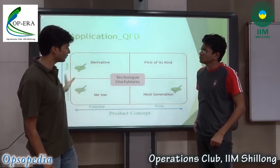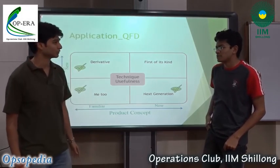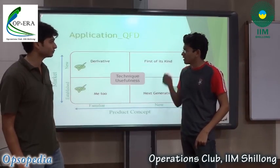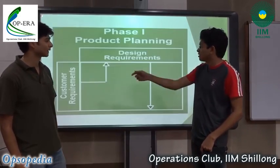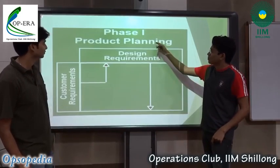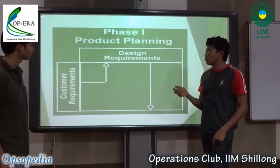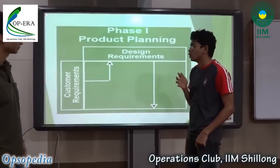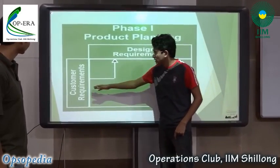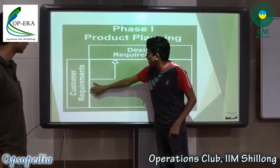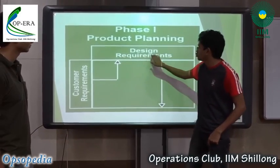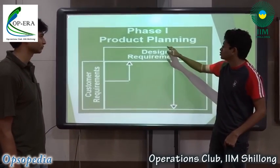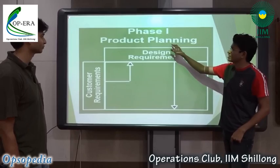How is this process actually carried out? There are basically four phases. The first phase is product planning. Here you take it from your basic customer requirements to the design requirements that you need on your product. This is your product planning stage.